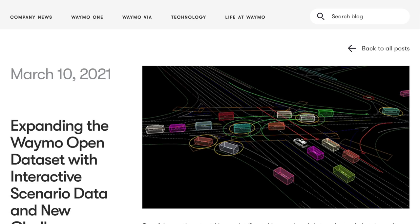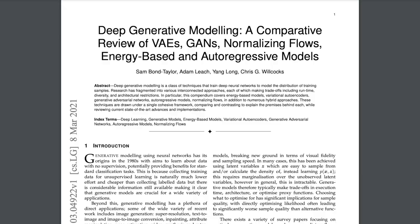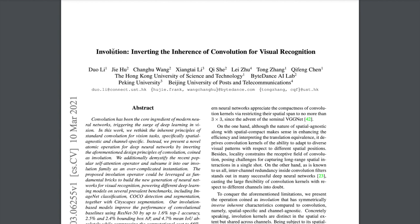Waymo has extended their dataset and we'll go through exactly what this means. There's also a deep generative modeling survey covering variational autoencoders, generative adversarial networks, normalizing flows, energy-based, and autoregressive models. Then there's Involution, a new convolution design that looks similar to separable convolution or depth-wise separable convolution — some new efficiency design leading to improvements on the ResNet-50.